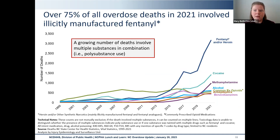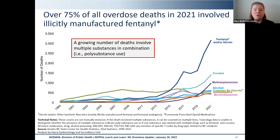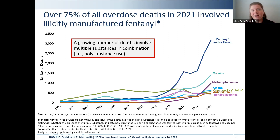This epidemic continues to be primarily driven by illicitly manufactured fentanyl. Over 75% of all overdose deaths in our state involved fentanyl. We're also seeing increases in cocaine and methamphetamine involved deaths. And importantly, around 75% of those cocaine and methamphetamine overdoses also had illicitly manufactured fentanyl on board. We're not able to tell from the data whether that polysubstance use is intentional — whether someone knowingly took cocaine and fentanyl, or if they were taking cocaine and weren't aware that fentanyl was also present.